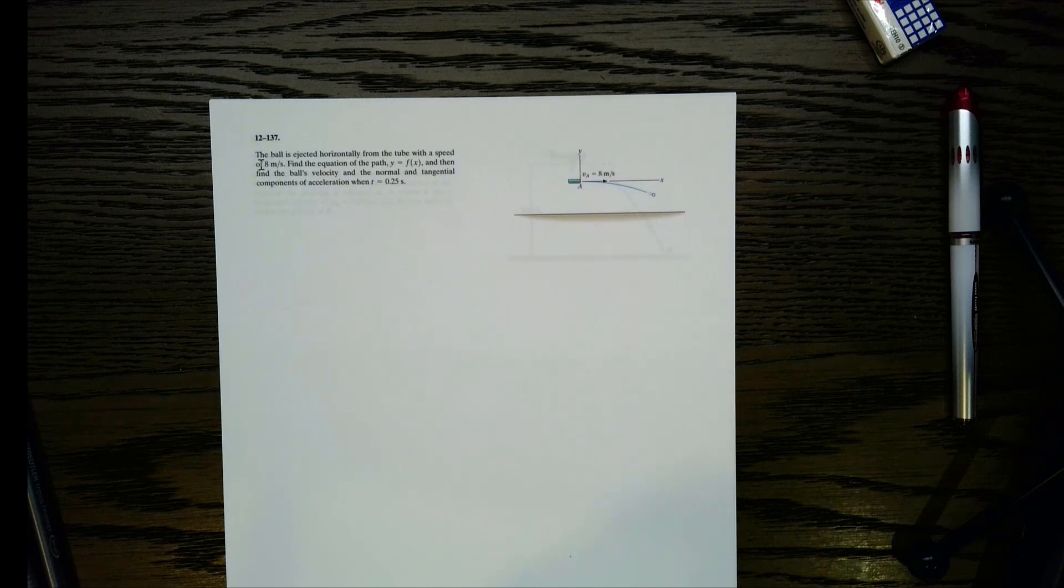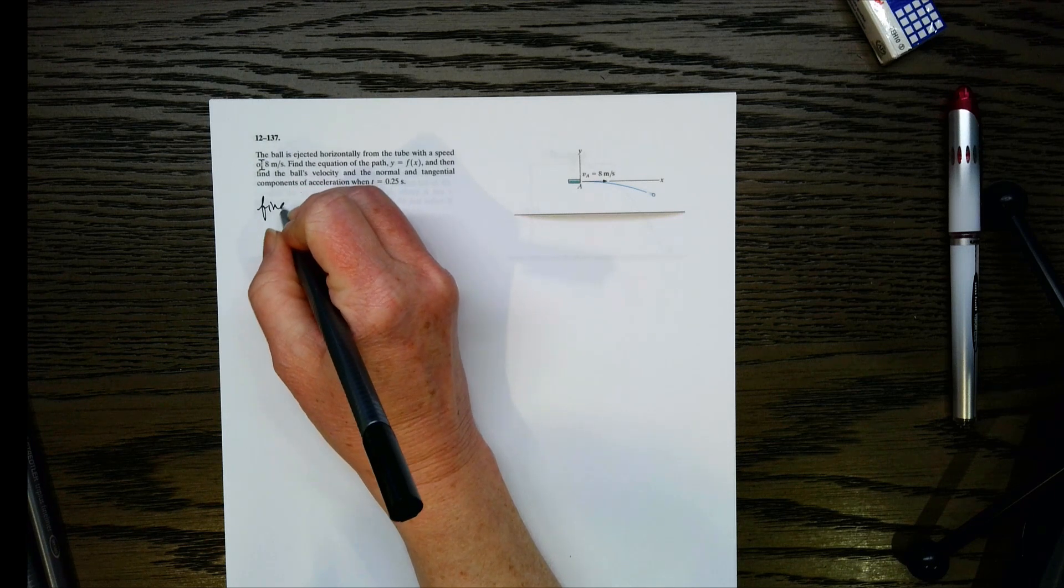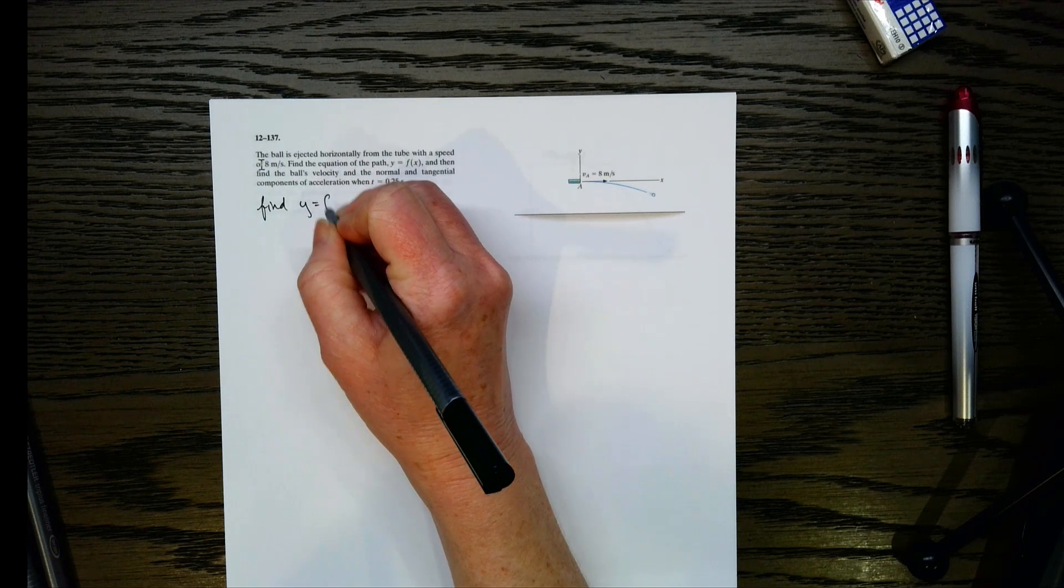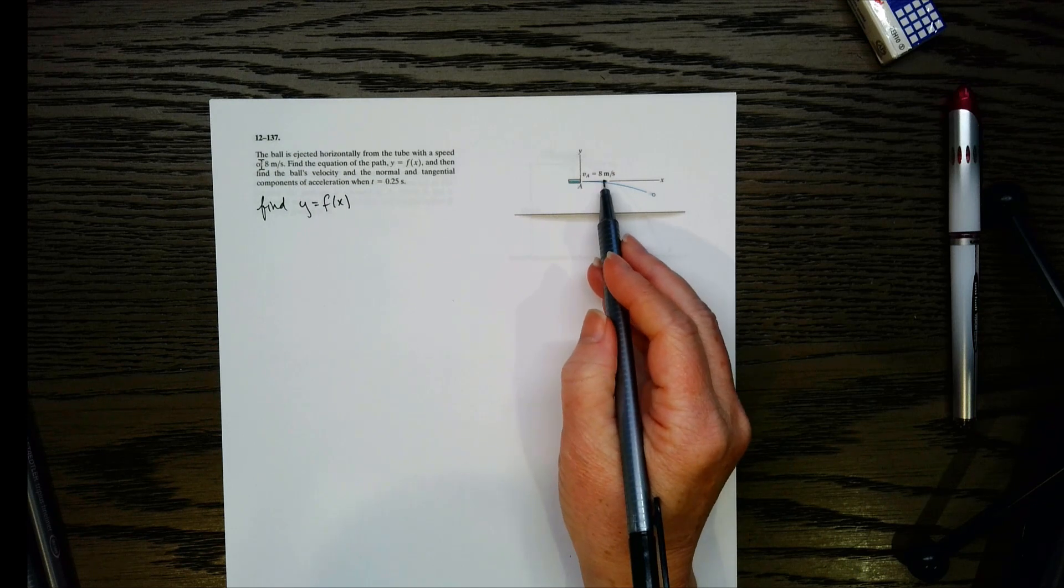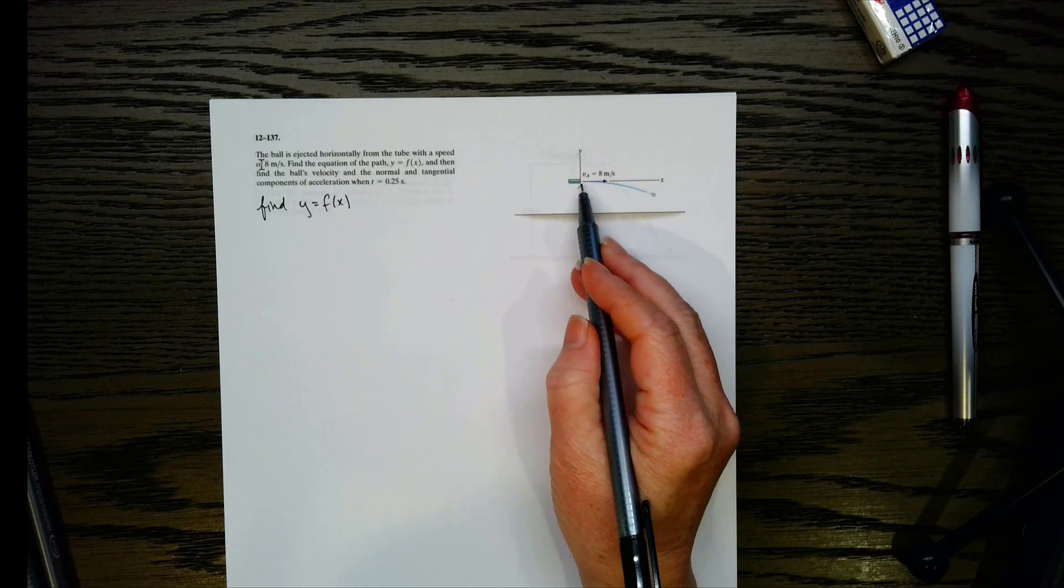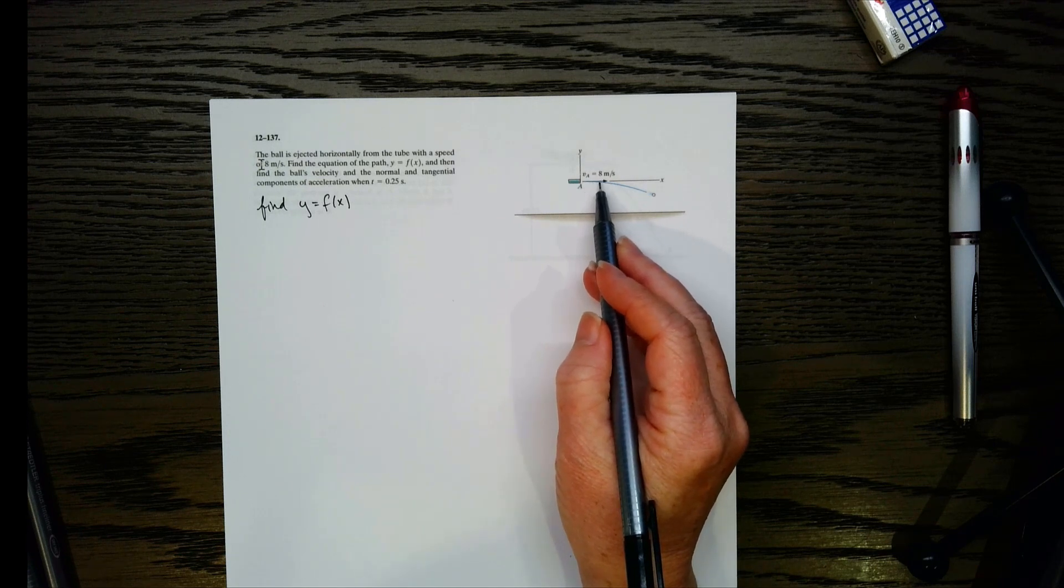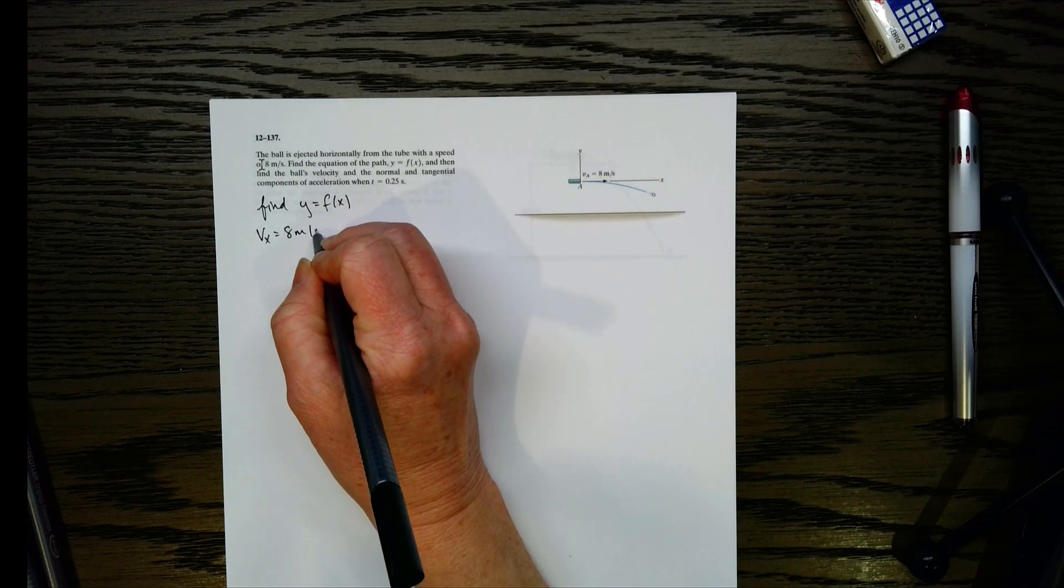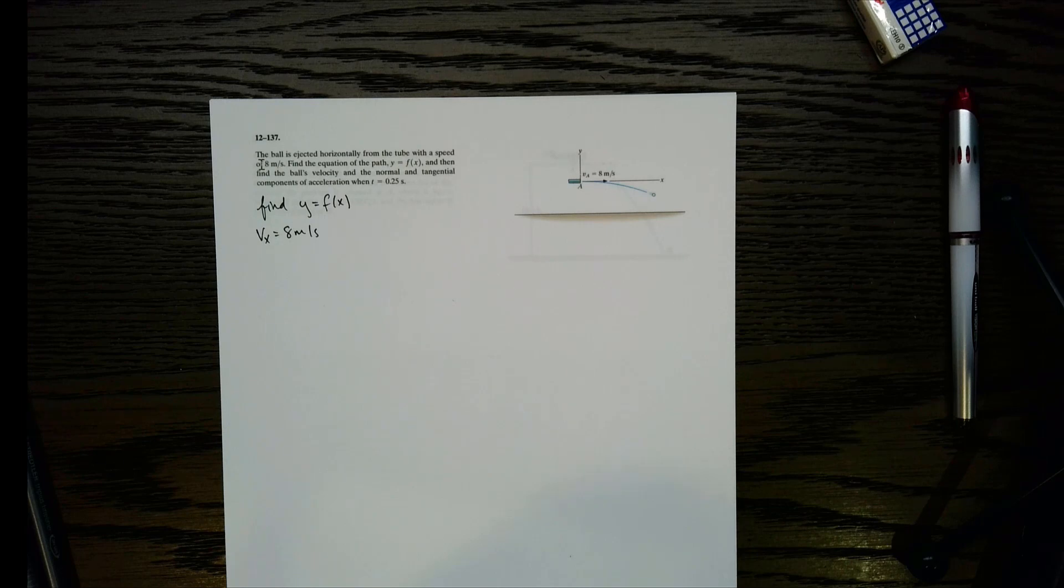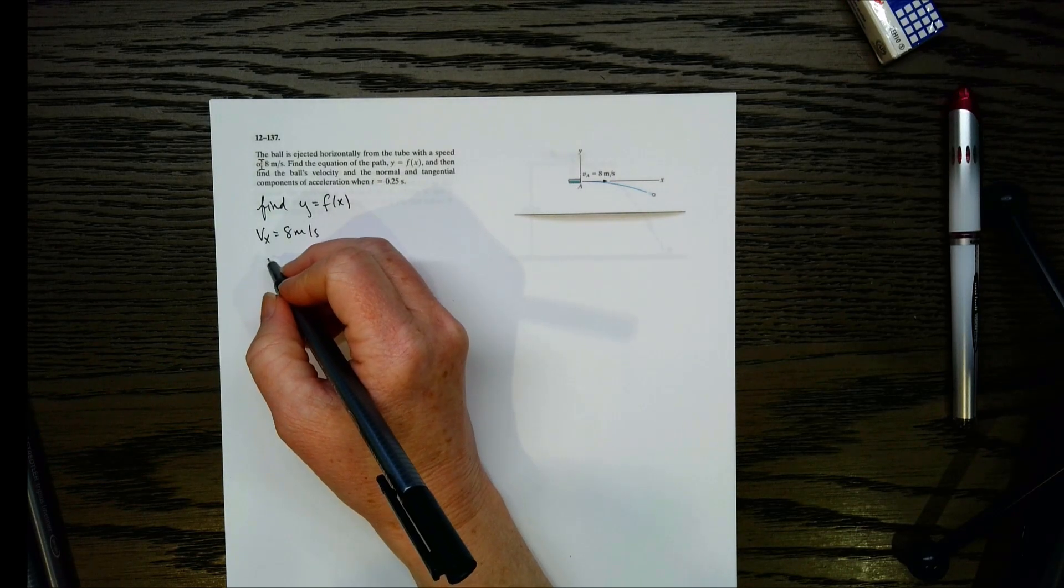Now, let's go ahead and let's find y equals f of x first. So basically, it wants the equation for y in terms of x. That's what it's looking for. Now, let's go ahead and see how we could do that. What do y'all think? Well, let's look at what we've got.